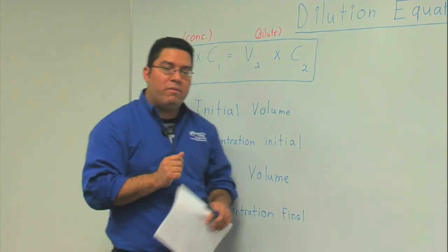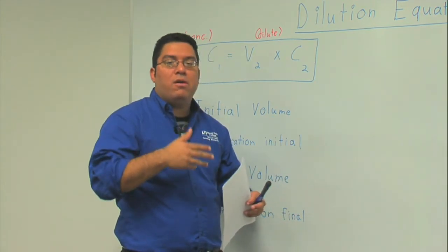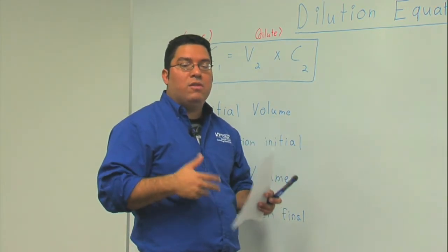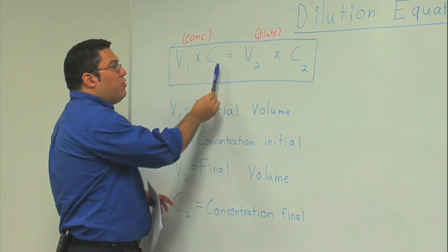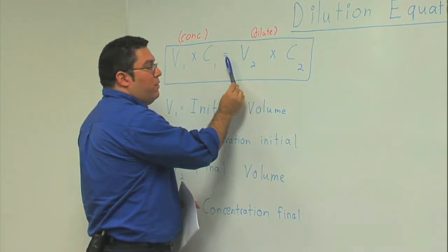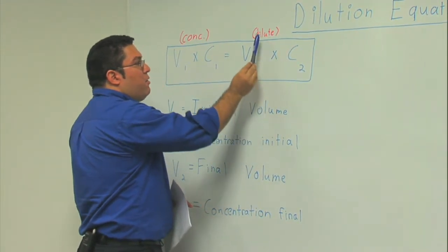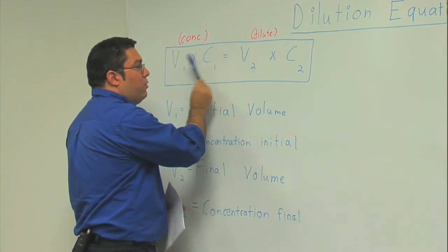You'll know you have to use the dilution equation whenever you run into a problem where they're either adding water or they simply tell you that they're creating a dilute solution - that's the key word you want to look for. You have to make sure that you try and keep your concentrated variables on the left side and the dilute variables on the right side. If you were to invert these it would still work as long as you keep them together in a group.